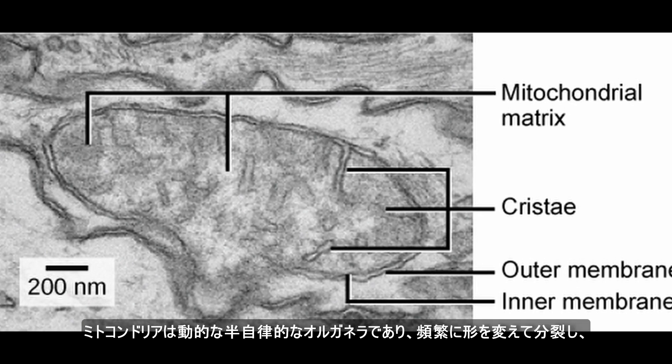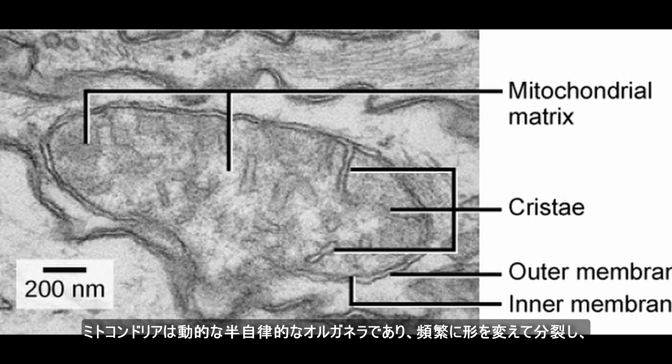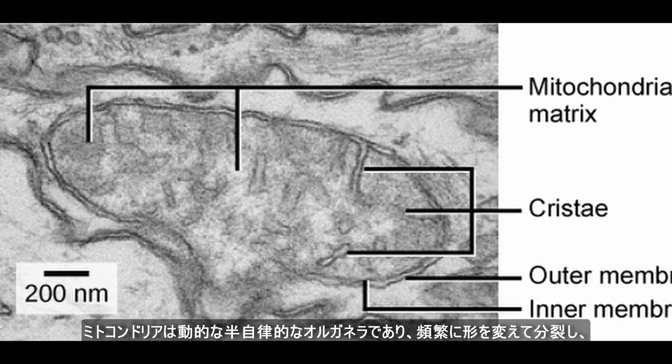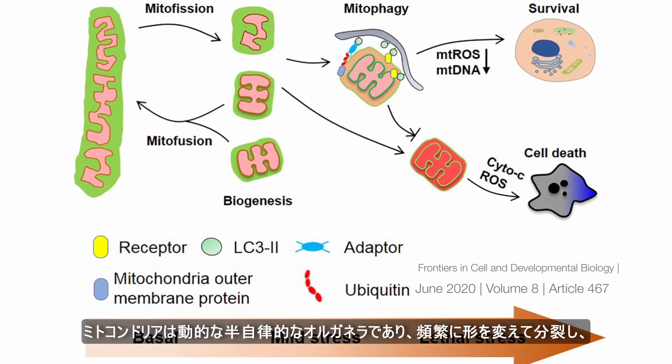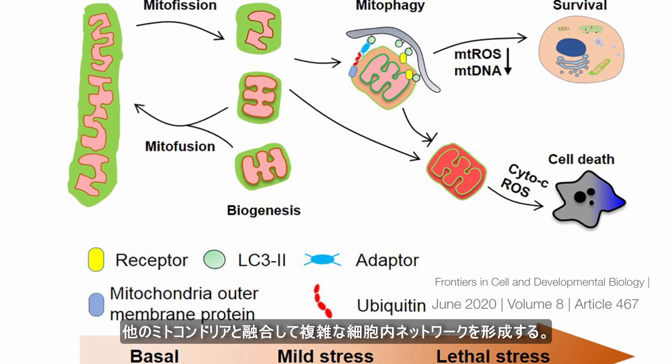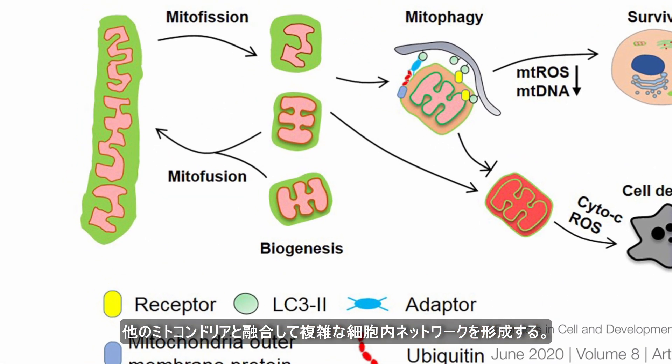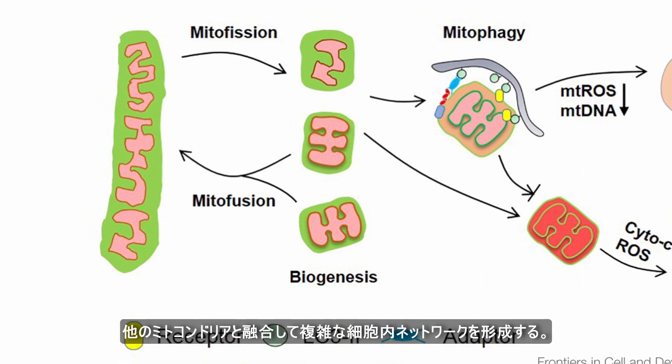Mitochondria are dynamic, semi-autonomous organelles that frequently change shape and divide, as well as fuse with other mitochondria to form complex intracellular networks.